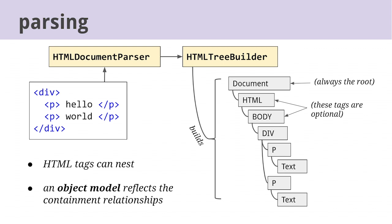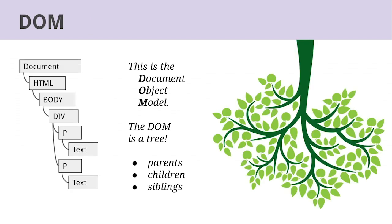We're in Blink code now in the renderer process. The first resource that comes down from the network is typically HTML; other resource types like CSS, JavaScript, and images are either embedded in the HTML or brought in as secondary resources. So our starting point for rendering is the HTML parser, which receives that stream of tags and text. HTML tags impose a semantically meaningful hierarchical structure on the document — a div might contain two paragraphs, and each paragraph might have some text inside it. The first step in rendering is to parse those tags to build an object model that reflects this structure with parent, child, and sibling pointers. We call that the document object model, or DOM.